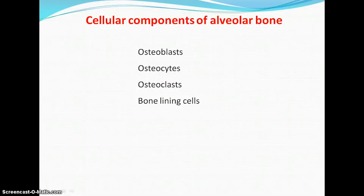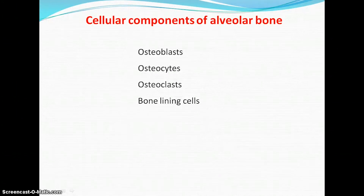The alveolar bone is composed of 65 percent inorganic and 35 percent organic components. The principal inorganic ions present in bone are calcium and phosphate ions. More than 90 percent of the organic component is composed of type 1 collagen, with a minor component of type 5 collagen.